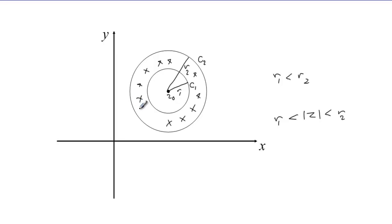The region of convergence will be the region between the two cycles and also on the cycles. Now the function in this case is analytic on the cycles and in between the cycles. This region of convergence is going to be called the annulus.